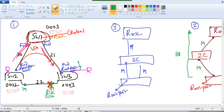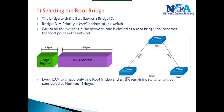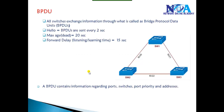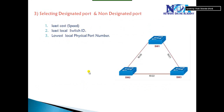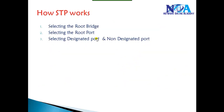This port will be in the blocking state as long as the main link is working. These are the default STP processes and they happen automatically whenever you connect multiple switches — we don't need to add any single command for this to work. We need to understand how exactly the STP process happens across three different steps: selecting the root bridge, selecting the root ports, and selecting the designated and non-designated ports — designated ports are in forwarding, non-designated ports are in blocking.